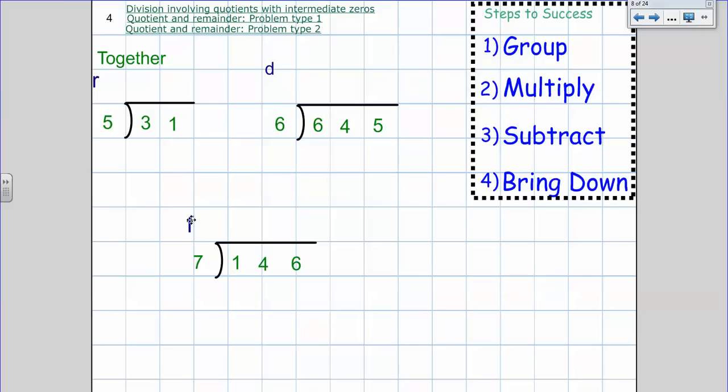But to start with, our division is going to follow the same four steps that we did with dividing yesterday. So whenever we divide we're always going to group, multiply, subtract, and bring down.